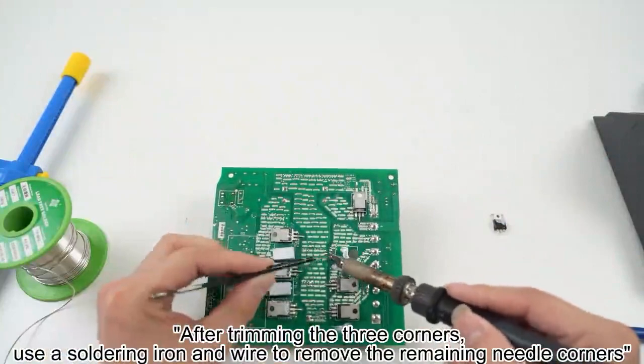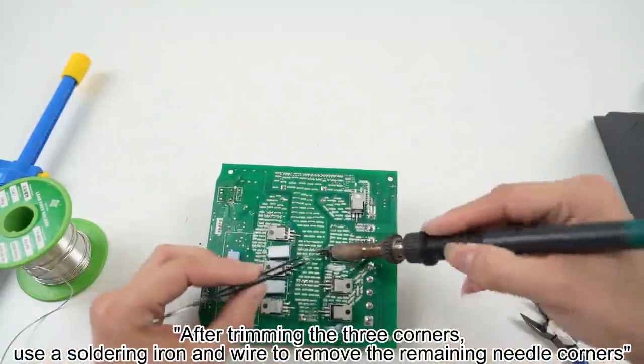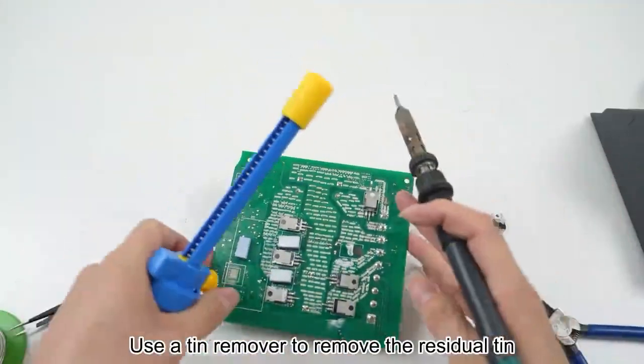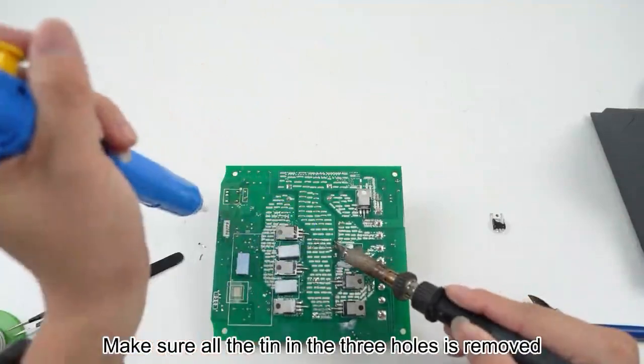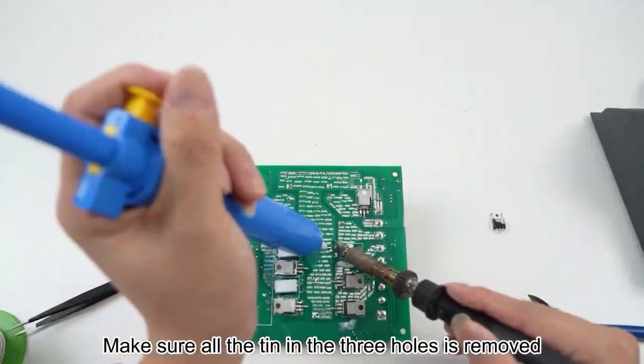use a soldering iron and wire to remove the remaining pin corners. Use a tin remover to remove the residual tin. Make sure all the tin in the three holes is removed.